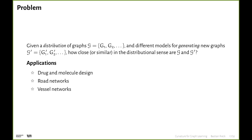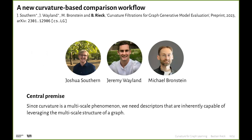What we did in our current preprint — joint work with Josh, Jeremy, and Michael — is a new curvature-based comparison based on the idea that we want to characterize curvature of a graph at multiple scales. The central premise is that since curvature can be a multi-scale phenomenon, we need descriptors inherently capable of leveraging this multi-scale structure, which leads us directly to persistent homology and computational topology techniques. We can borrow ideas from persistent homology, using the curvature of a graph as a filtration function, obtaining topological representations that can be easily compared.